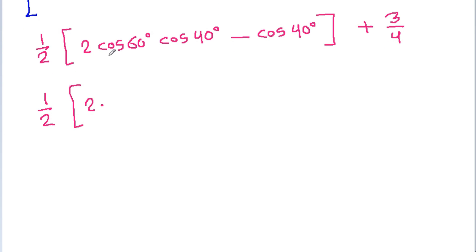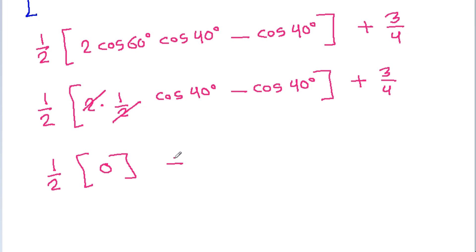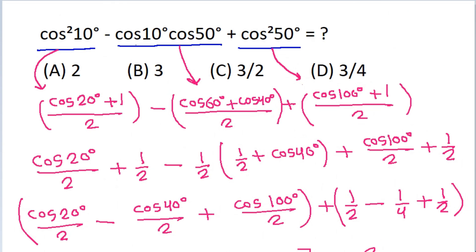The 2 and 4 cancel appropriately, and cos40° - cos40° = 0, leaving 0 + 3/4 = 3/4. So the correct option is 3/4.